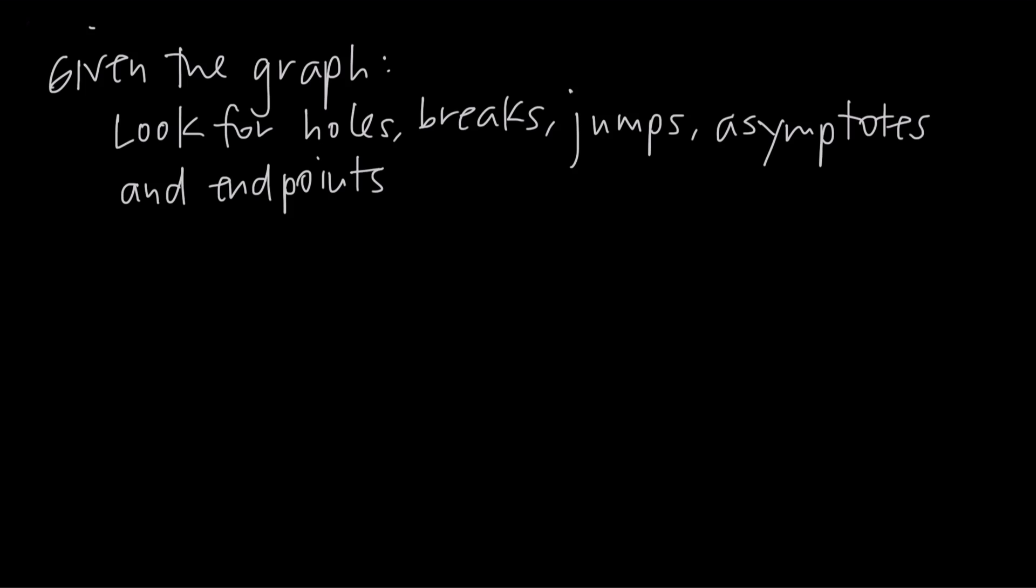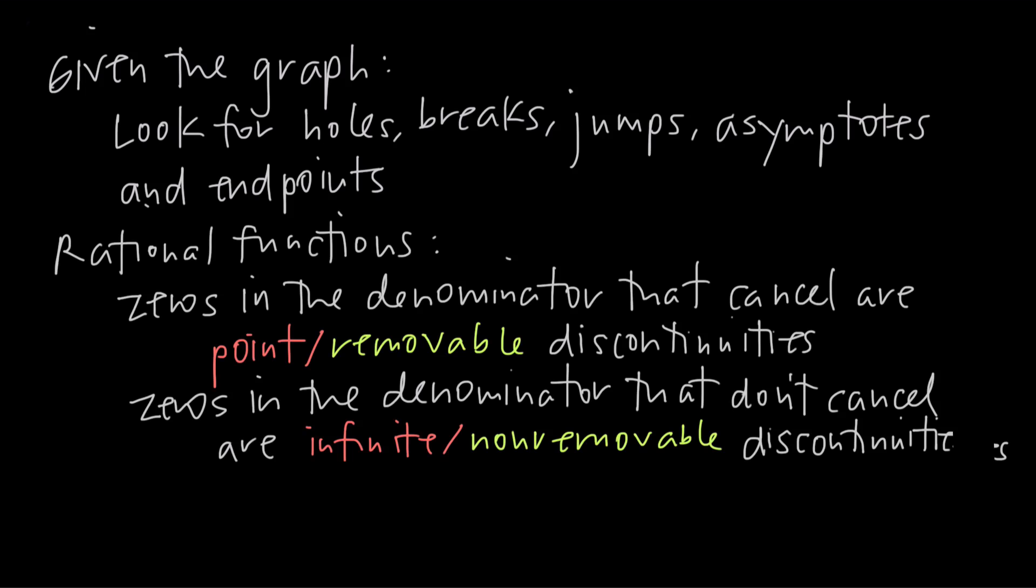If you don't have the graph but your function is a rational function, look for values that make the denominator 0. These will be point discontinuities if you can factor them out, or infinite discontinuities if you can't.